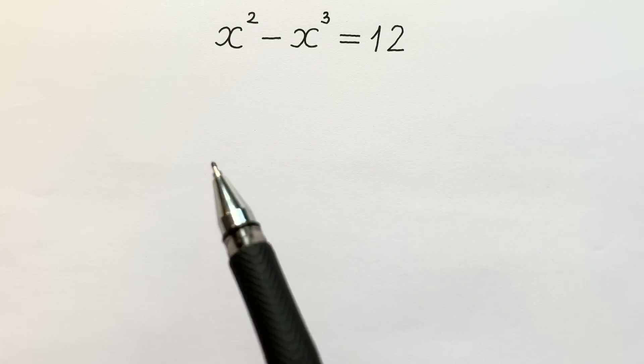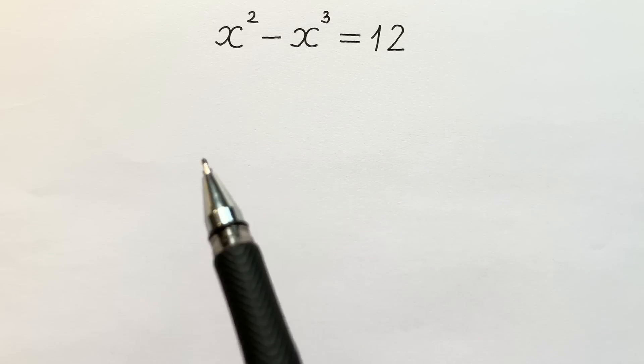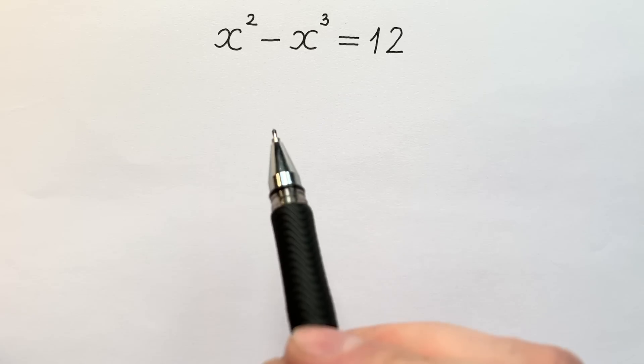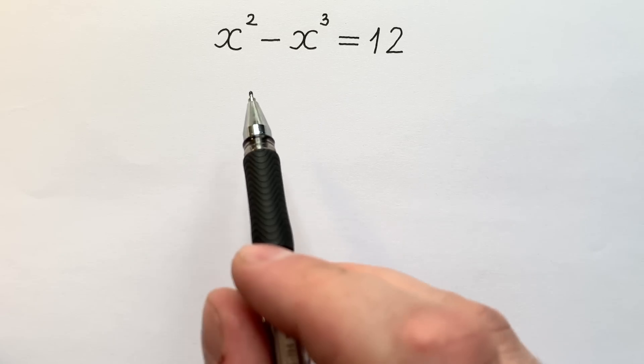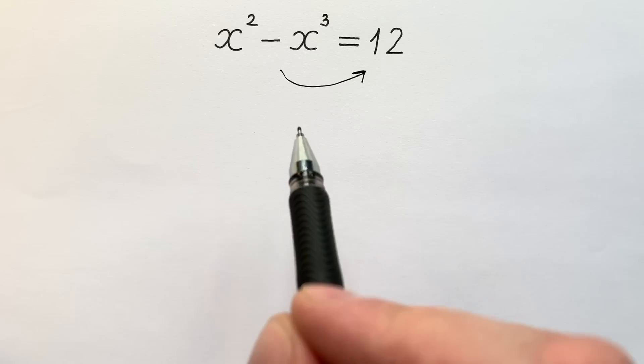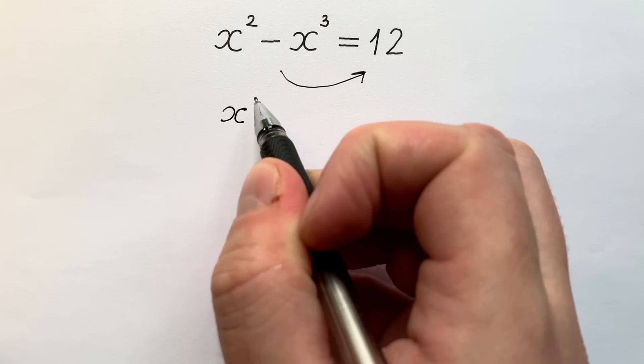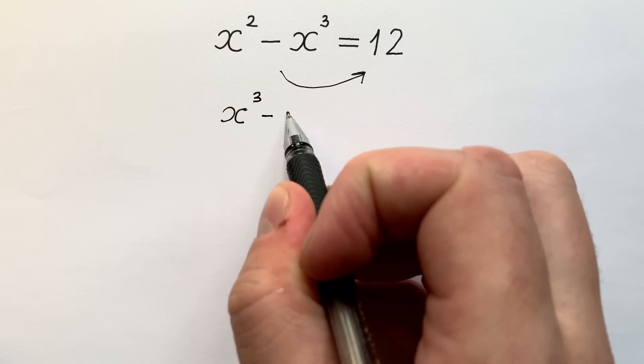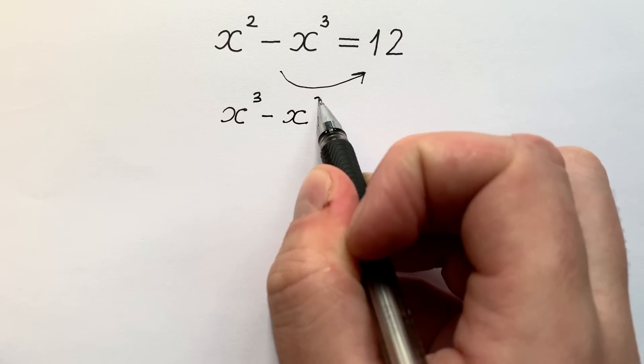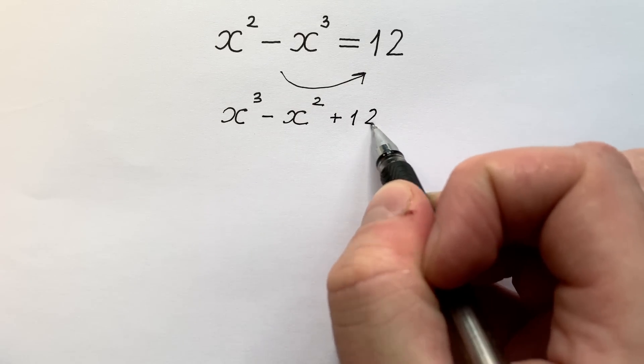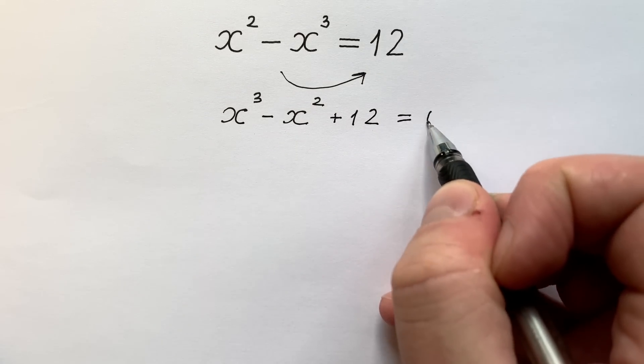They used one clever method which is very popular in Olympiad maths. Let me show you this tricky way. At first, let's put the left part of this equation to the right side. It's easy: x to the power of 3 minus x to the power of 2 plus 12 equals to 0.